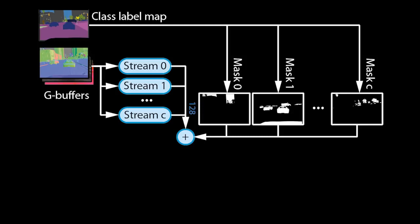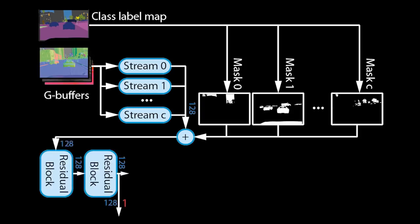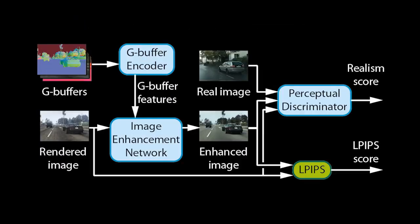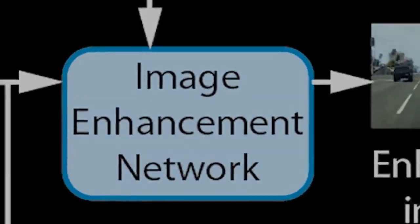Let us now zoom in on the G-buffer encoder. From the G-buffers, we can derive a semantic class label map, which assigns an object ID to every pixel. We pass the G-buffers through multiple convolutional network streams and fuse the streams again based on the object IDs. This allows the encoder to learn different ways of processing for each type of object — for example, trees will be treated differently from cars. The resulting feature tensors are further processed by residual blocks, which output tensors at multiple scales.